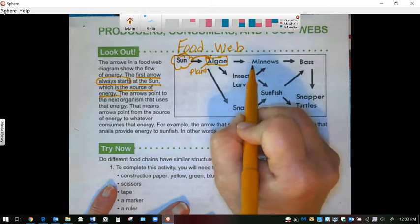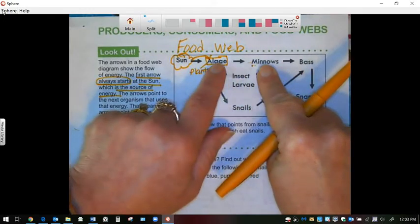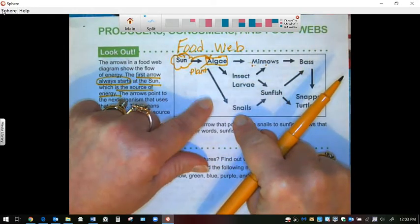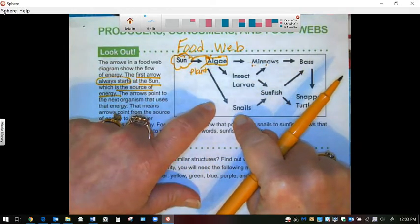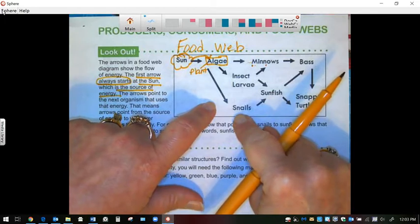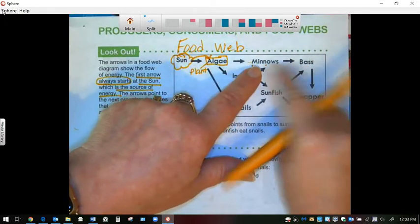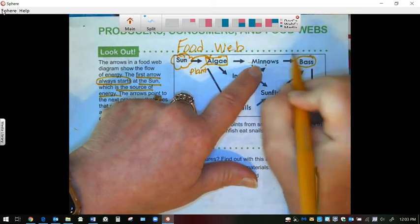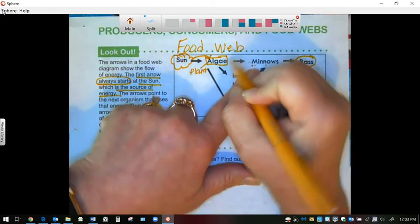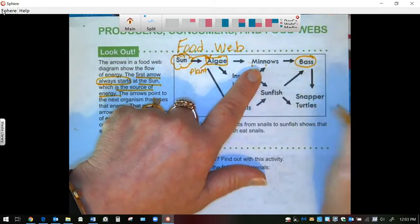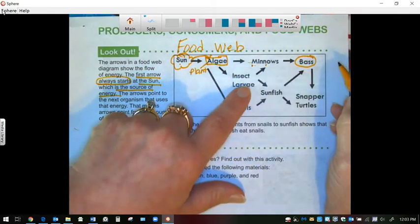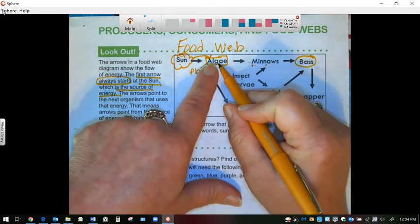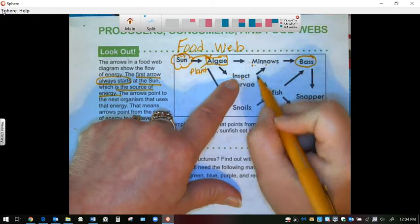Then who eats the algae? Minnows, which is a small fish. Minnows eat algae. But who else eats algae? Insect larvae and snails. So let's look to see who eats the minnows. The bass can eat minnows. So if the bass eats a minnow, it's getting the energy from the minnow, the algae, and the sun. And if the insect larvae ate the algae, and then the minnow ate it, and then the bass.